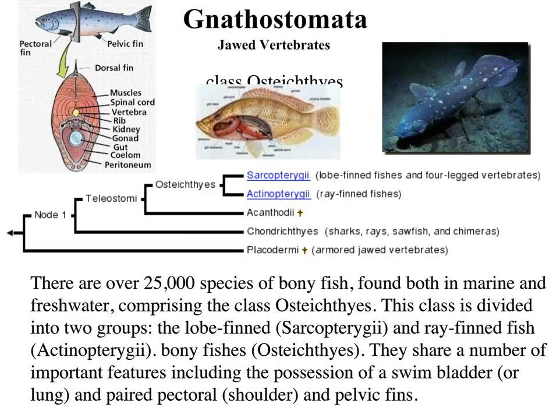Of our jawed vertebrates and bony fish, there are approximately 25,000 species — these guys are doing incredibly well, found in both marine and freshwater environments. Of those, there are two different groups: the lobe-finned fish and the ray-finned fish. The lobe-finned fish are our ancestors, and we'll talk about those in the next couple of slides. The ray-finned fish are the fish we tend to know and love today — the ones we think of in our tanks — and they've done incredibly well from an evolutionary perspective.